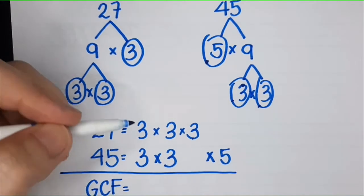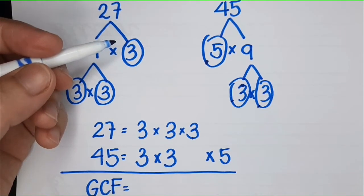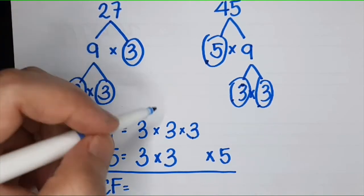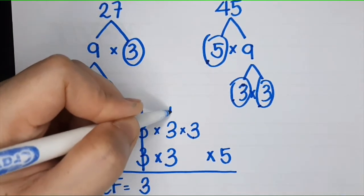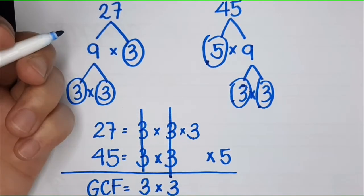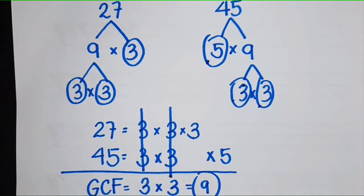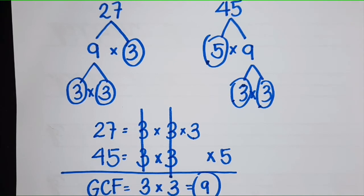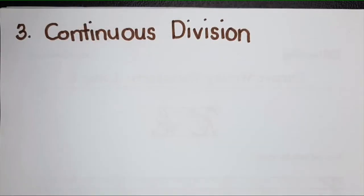You bring down the complete column or complete columns. This one is complete. If we bring it down, this one is also complete. So you have 3 times 3, so the answer is 9. This is the GCF using prime factorization. I hope it's clear. This is the last method, the continuous division.